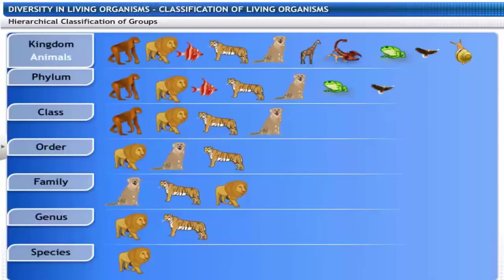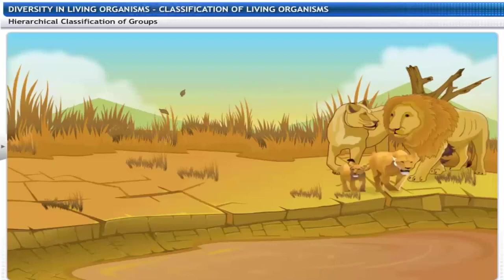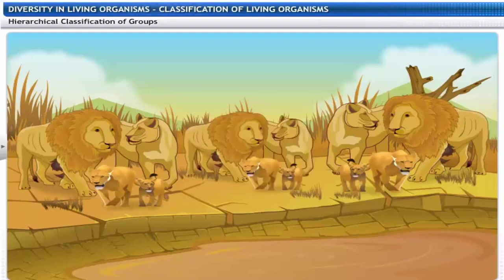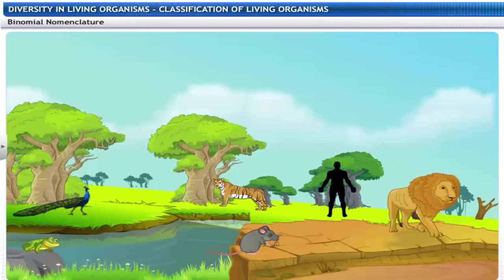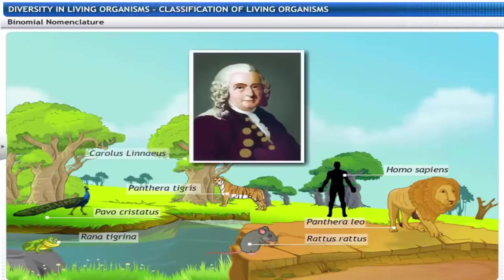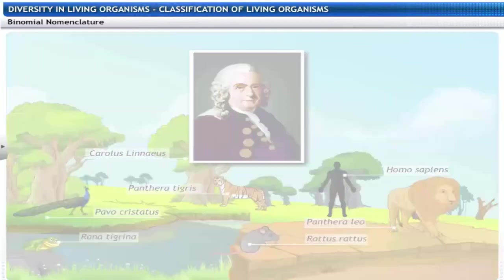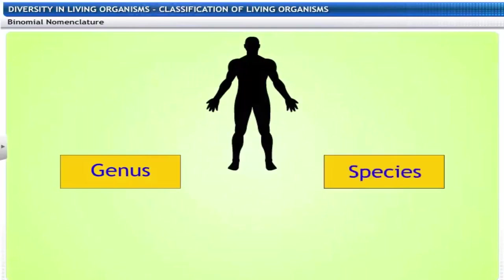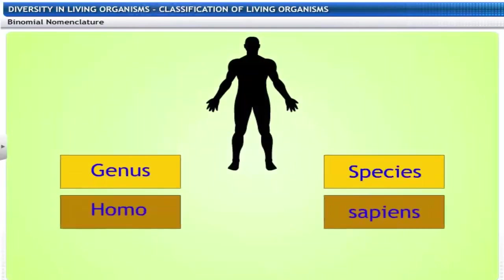The basic unit of classification is species. A species includes all organisms that are similar enough to breed and produce fertile offspring. Another important landmark in the history of classification was the development of the system of scientific naming, or nomenclature, introduced by Carolus Linnaeus. When we name an organism, we write the name of the genus first and the species later. Both of these are Latin words.